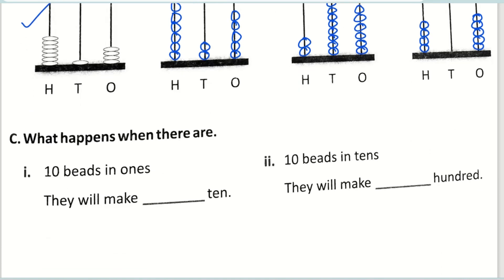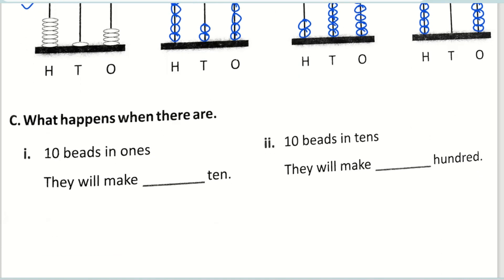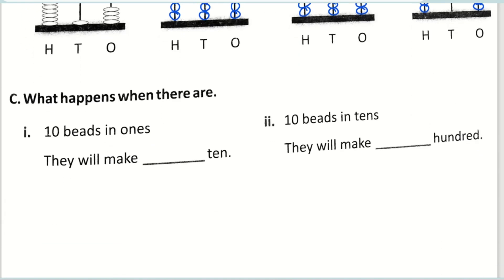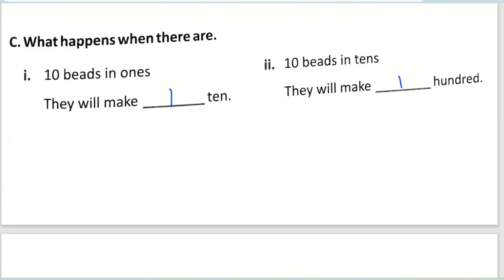The next one is: what happens when there are ten beads in the ones place? They will make one ten. The same way, ten beads in the tens place — they will make one hundred. Very good.